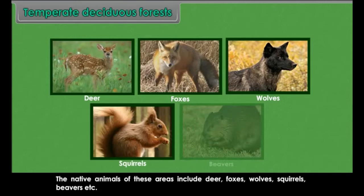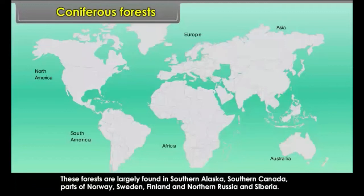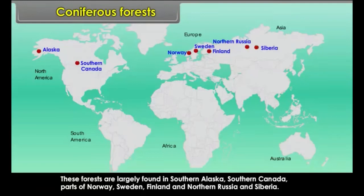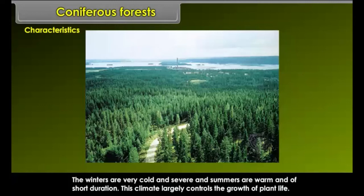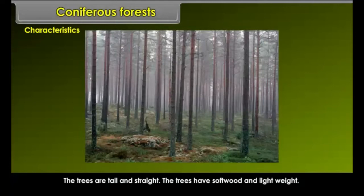Coniferous forests are largely found in southern Alaska, southern Canada, parts of Norway, Sweden, Finland and northern Russia and Siberia. Characteristics: The winters are very cold and severe, and summers are warm and of short duration. This climate largely controls the growth of plant life. Due to low rainfall and severity of winters, plant growth is very slow. The trees are of evergreen type with small needle-like leaves, tall and straight, with soft wood and light weight. This wood has great demand in paper making, newsprint, matches and furniture.